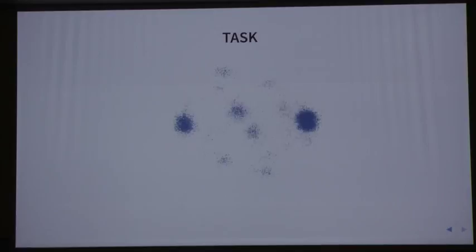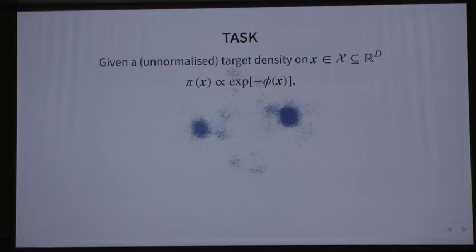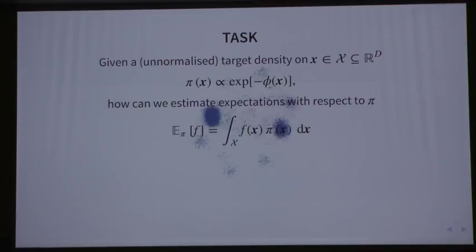More specifically, we're going to consider that we have this target density defined by this potential function phi in d-dimensional state space. What we want to do is we want to be able to compute expectations with respect to this density, but also potentially compute normalizing constants. This might be interesting in an inference setting to compute a model evidence term.